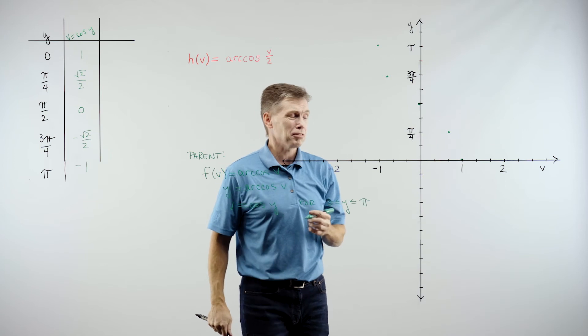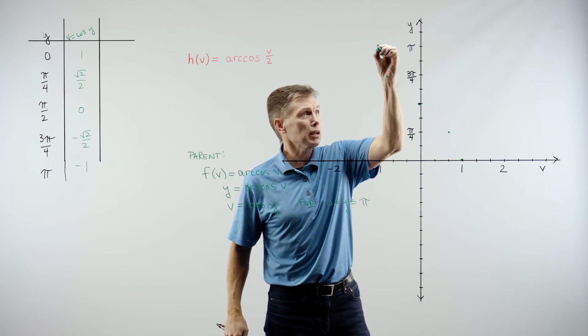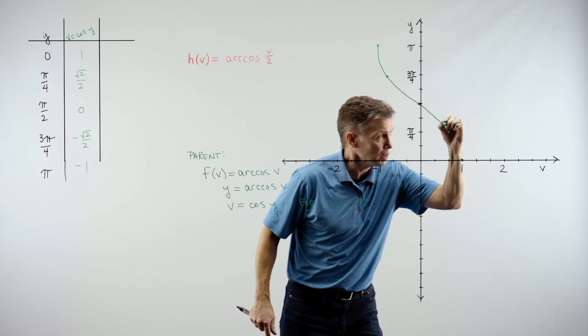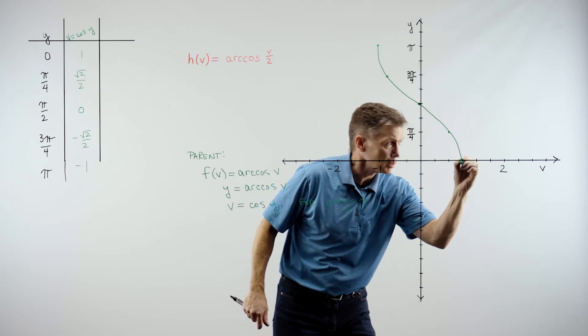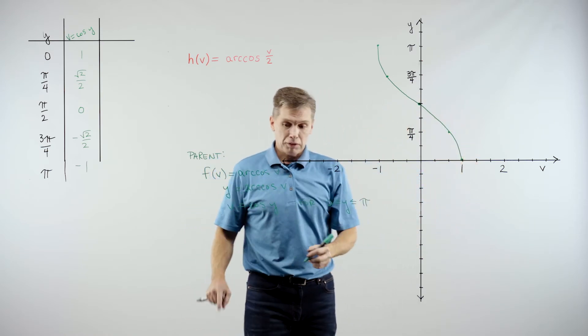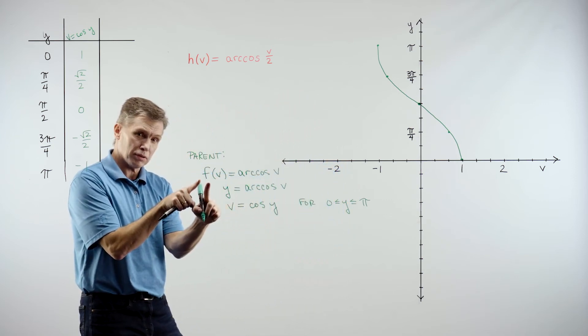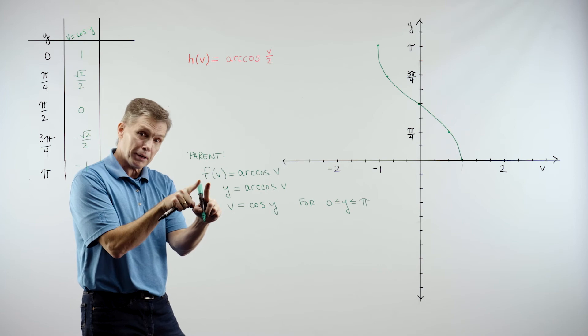Okay. Trying to make it neat enough that if I now connect the dots, that should look like the inverse cosine. All right. And again, though, that was my parent graph. Okay. All right. Now what?